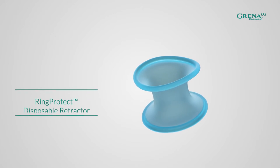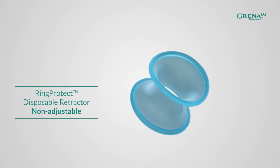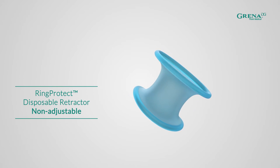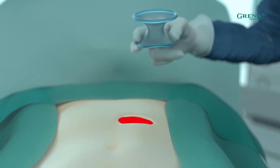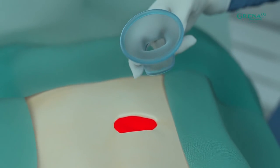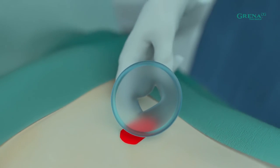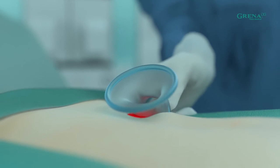If you use the smaller, non-adjustable version of the retractor, check the body thickness and choose the appropriate size. Now, insert the smaller ring into the incision and stretch the larger one on the body surface. Ensure that the internal ring presses against the peritoneum or pleura.